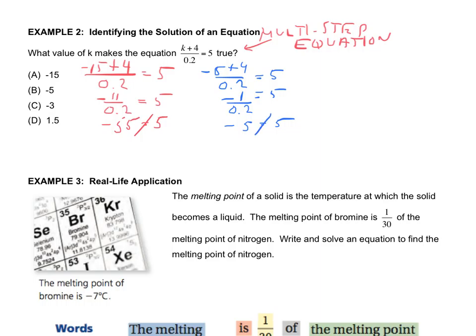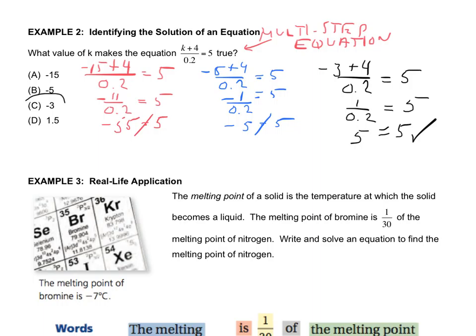For letter C: negative 3 plus 4 divided by 0.2 equals 5. Negative 3 plus 4 is 1, divided by 0.2 — which is really one-fifth — means 1 divided by 0.2 is 5. We've found our answer, and that is one way to approach this, especially with multiple choice: use the given answers and plug them in.